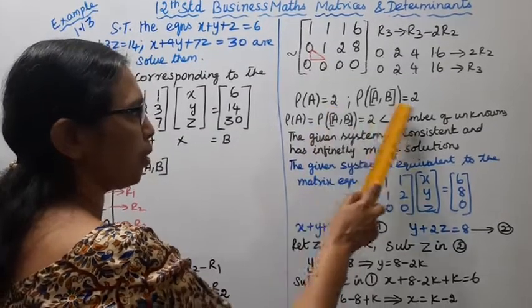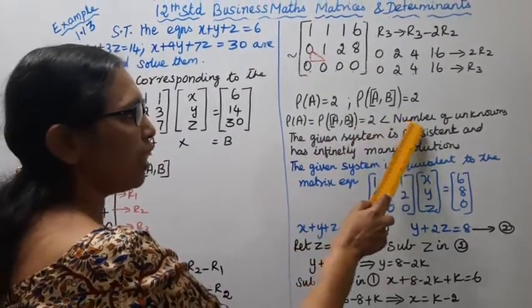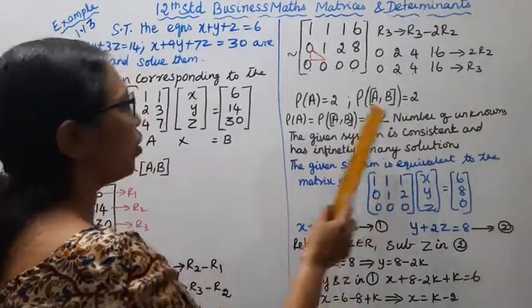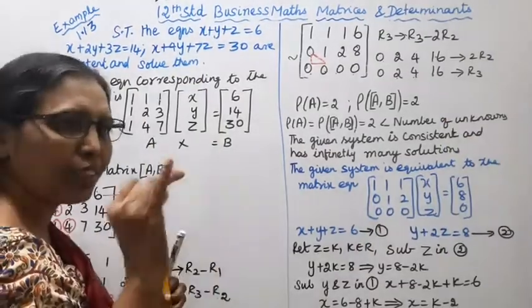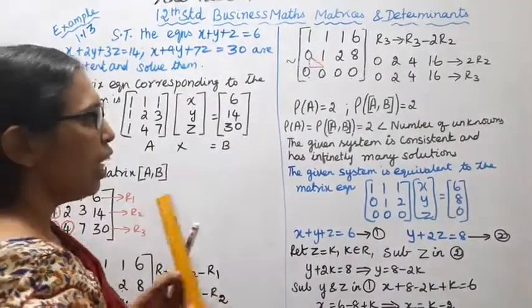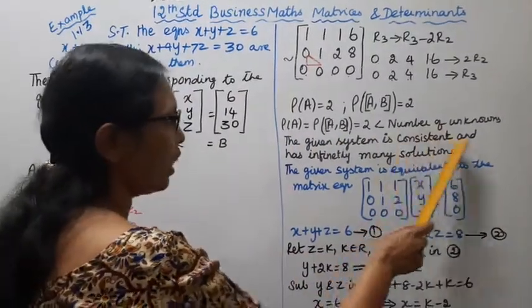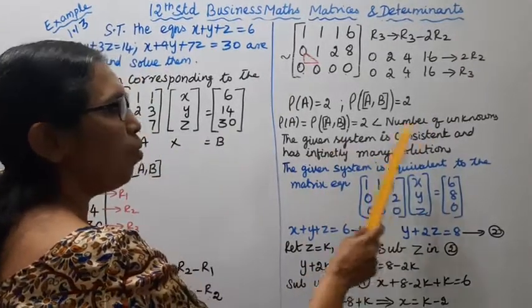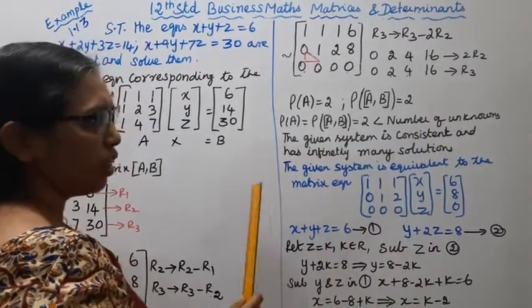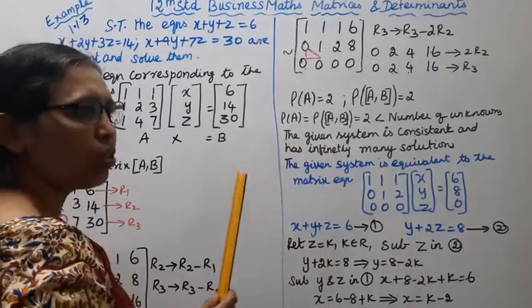The rank is less than the number of unknowns x, y, z. The given system is consistent and has infinitely many solutions.